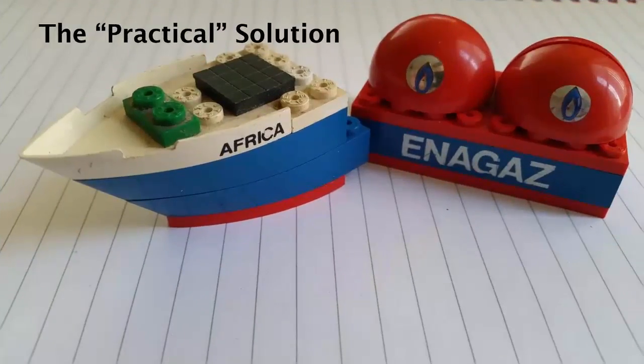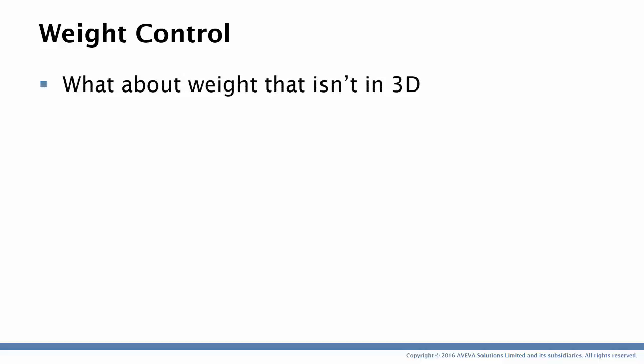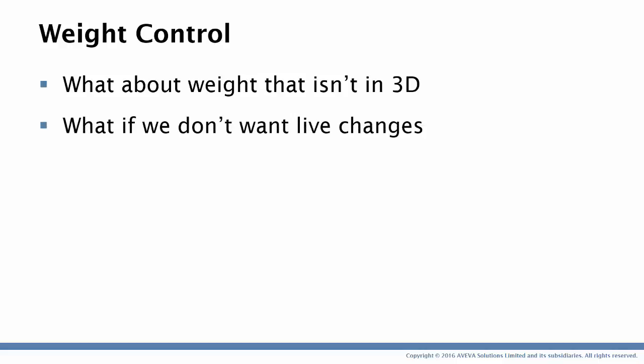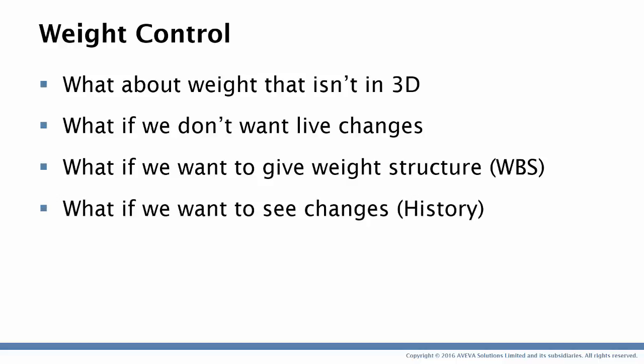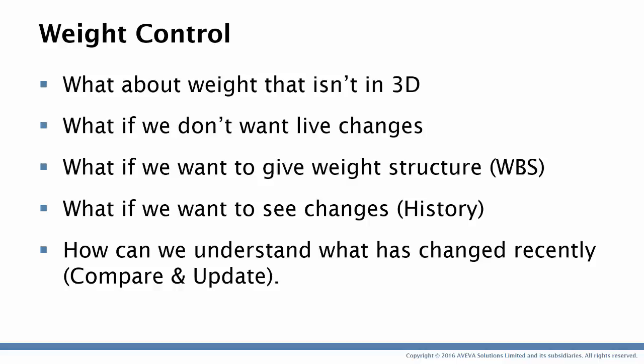Let's now look towards using a much more practical solution for weight control. This is when we start to put in some sensible requirements. How do we represent weight that isn't in 3D? What if we don't want to work with live changes — as in the previous section, because we're reading from the database directly, if there are changes and we do a get work then those changes are going to influence our results as we're working. What if we want to give the weight breakdown some structure, such as a traditional work breakdown structure? What if we want to see changes? Well that's a system already available in Aviva Engineering — we can see the history and when changes have been made. And how can we understand what has changed recently? We have our compare and update tools.